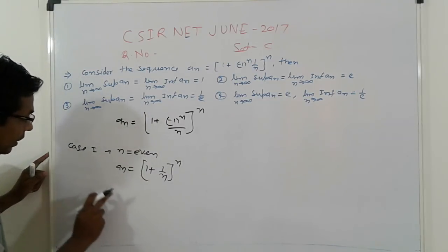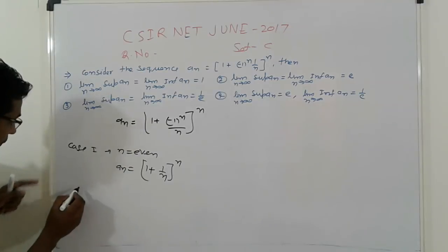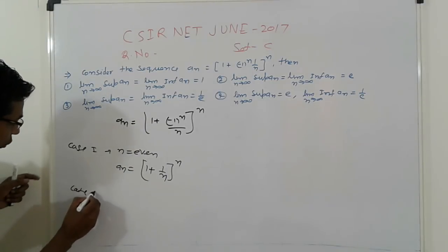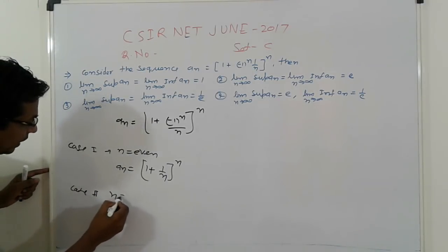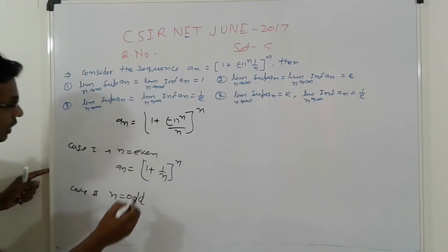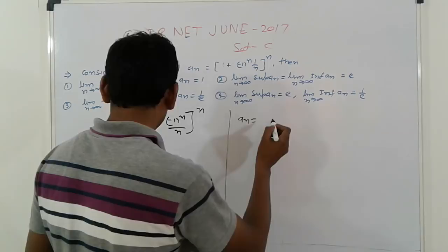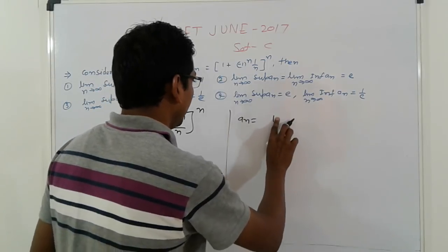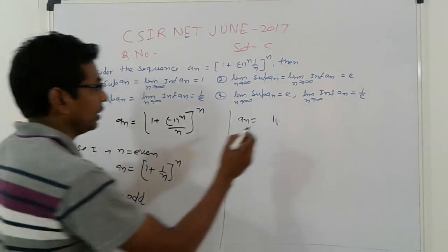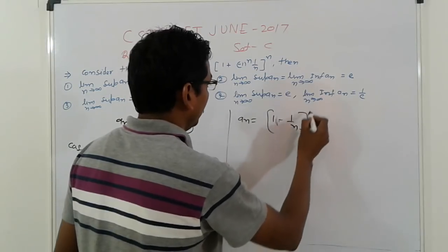And next, case 2: n equal to odd. So what is An? An is equal to 1 plus, here that is odd, means here minus 1 upon n raised to power n.